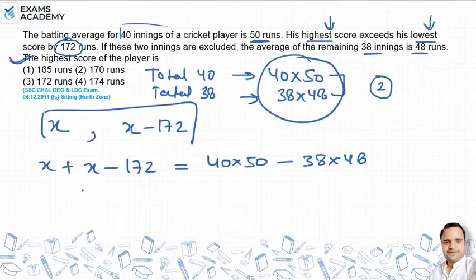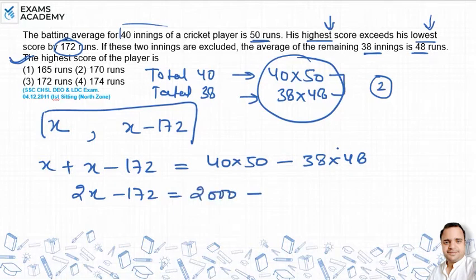Here, x and x will be 2x minus 172 equal to 40 into 50, that is equal to 2000, minus 38 into 48, which gives us 1824.